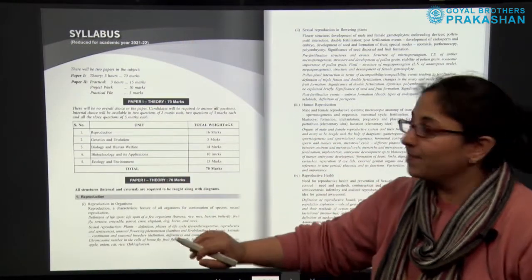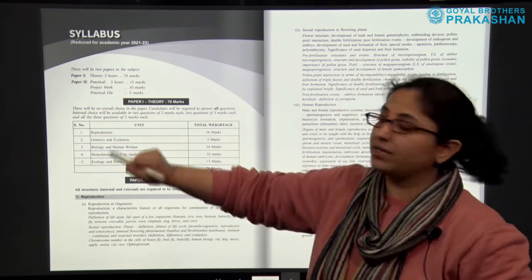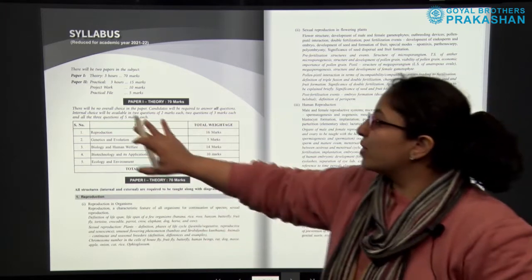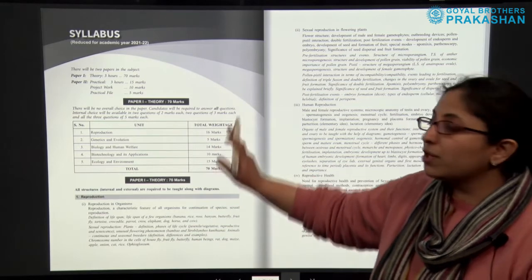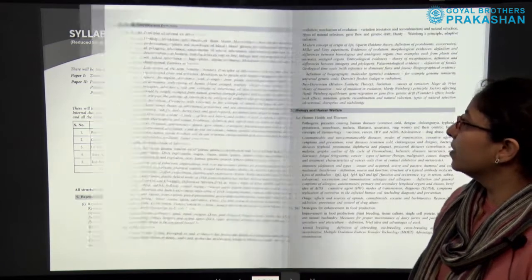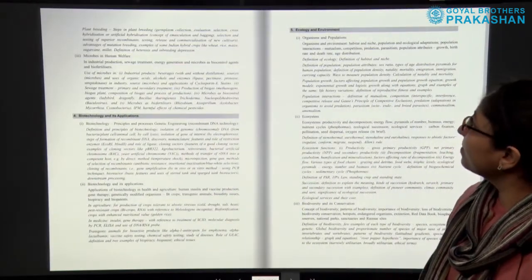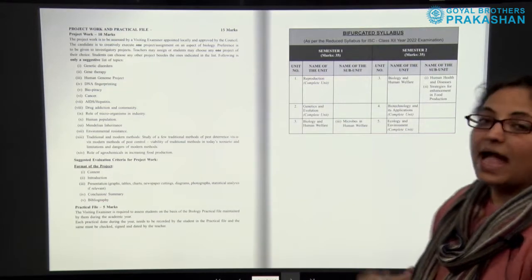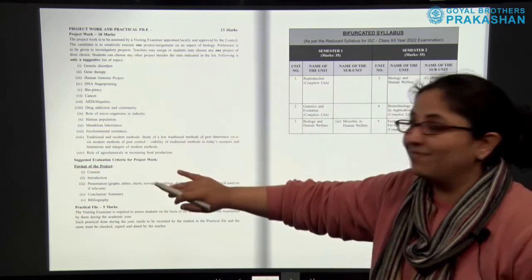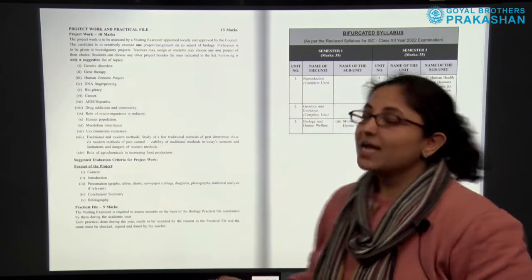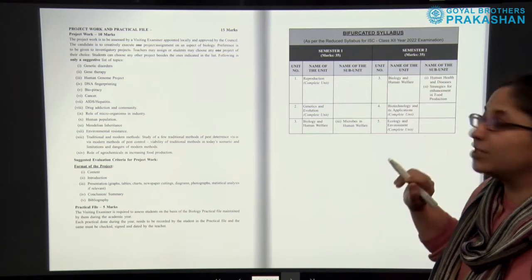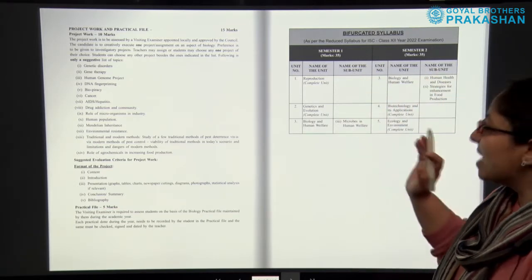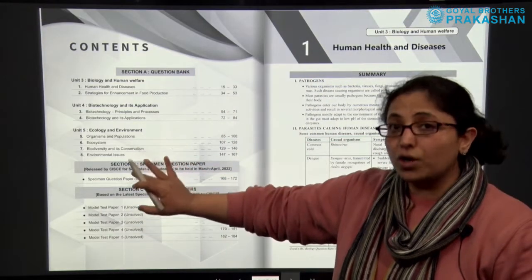To start with, we have the syllabus at the beginning. There are two papers: Paper 1 Theory and Paper 2 Practical. The syllabus and total weightage for the theory paper are given here — units on the left-hand side and marks on the right. After the theory syllabus, we have the syllabus for practical work, which is for 15 marks, and project work in practical file for 10 and 5 marks respectively. We also have the bifurcated syllabus for Semester 1 and Semester 2, both worth 35 marks each.